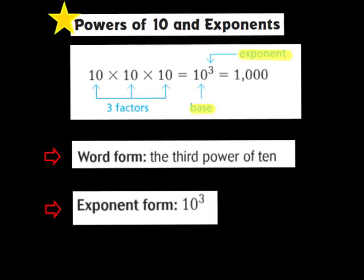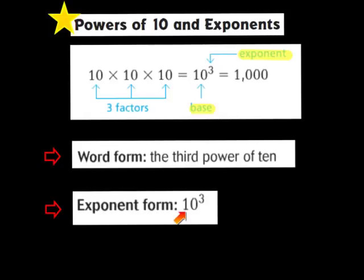Before we begin solving problems in this lesson, I want to talk to you about powers of 10 and exponents. Expressions with repeated factors, such as 10 times 10 times 10, can be written by using a base with an exponent. The base is the number that is used as the repeated factor. The exponent is the number that tells how many times the base is used as a factor. We can write this in word form as the third power of 10, or using an exponent showing the base 10 and the exponent 3, because we're repeating the factor 10 three times.